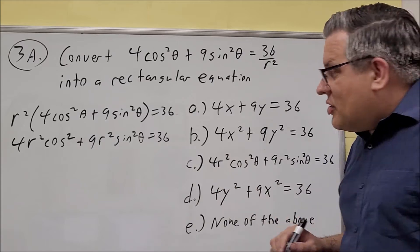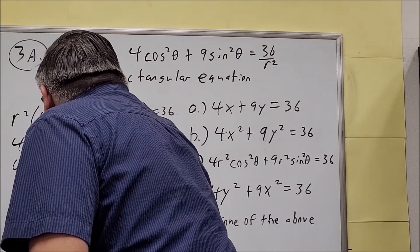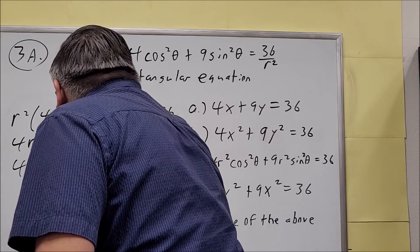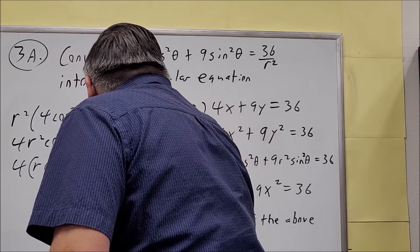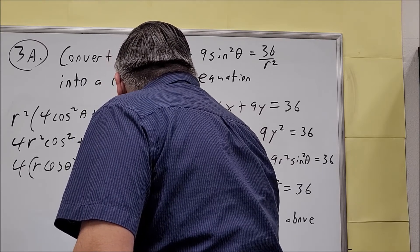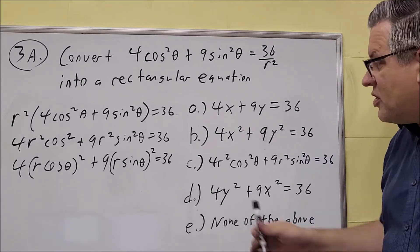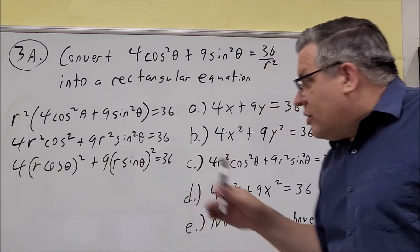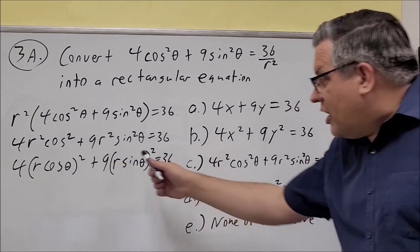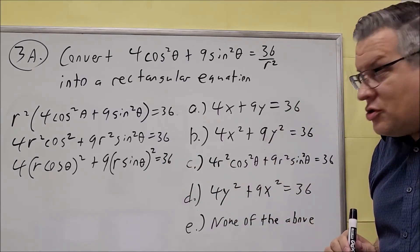Now what we can do on each of these is we can write it like this: r cosine theta all of that quantity squared, and then we can do r sine theta quantity squared that equals 36. So I'm purposely writing it this way so that you can see r cosine and r sine, that's going to be our x and y substitutions.